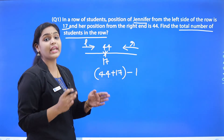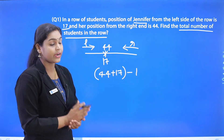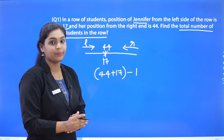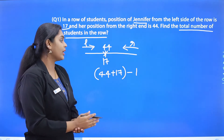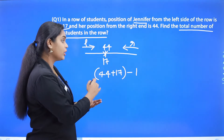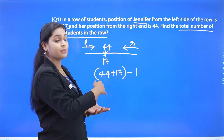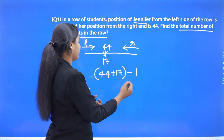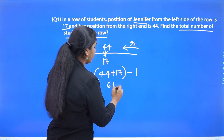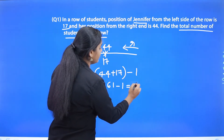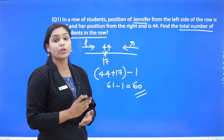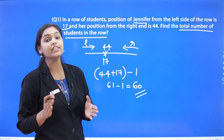We subtract 1 because the position of the same person — Jennifer — is given. She is 17th from the left and 44th from the right, so she is counted twice. To avoid that repetition, we subtract 1. So 44 plus 17 is 61, and 61 minus 1 is 60. There are a total of 60 students in the row.